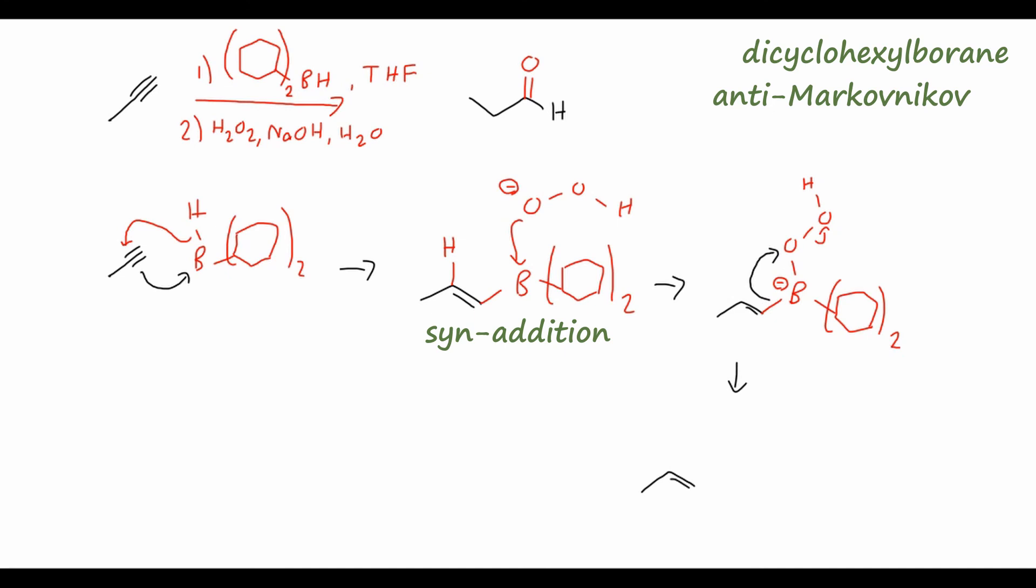Then we will hydrolyze this intermediate with water and NaOH, giving us yet another enol, like we just encountered, except now the OH group is on the primary carbon. So again, this is going to be at the anti-Markovnikov position. And because this is an enol, just like before.